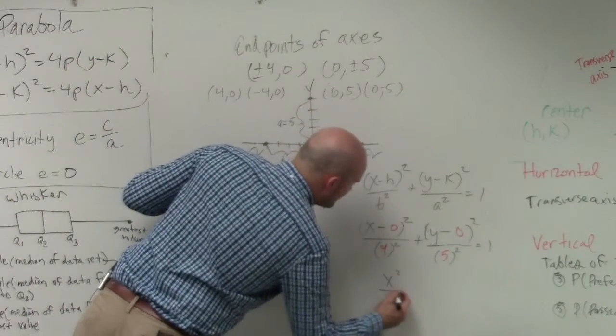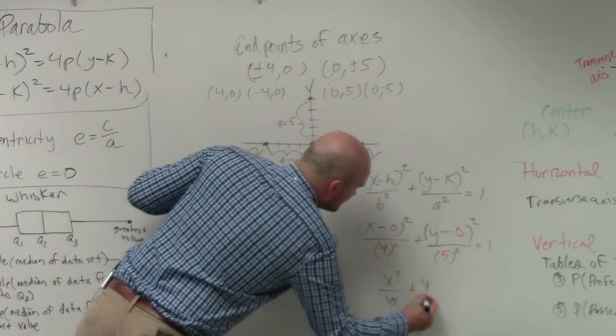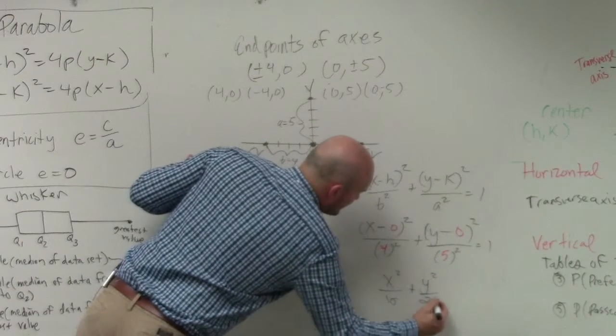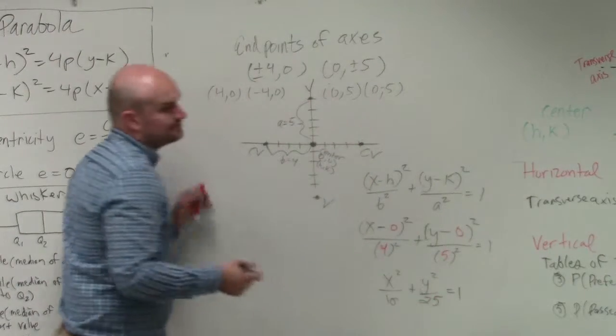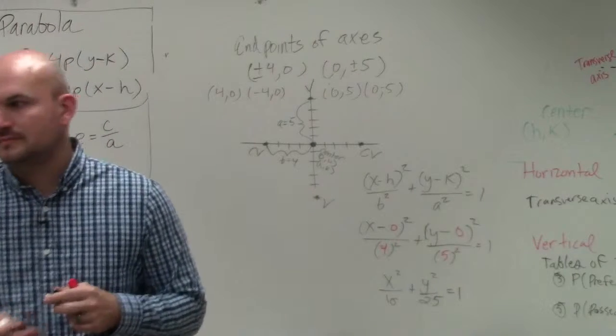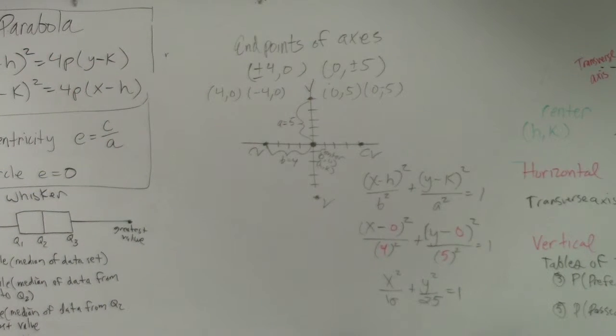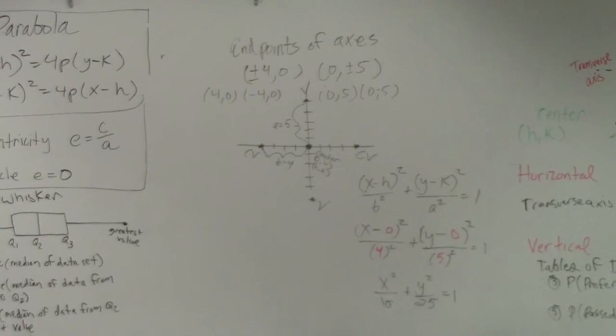So it's x squared over 16 plus y squared over 25 equals 1. And that's your final answer. That's all you guys had to do. So the hard part about these, it's not really...